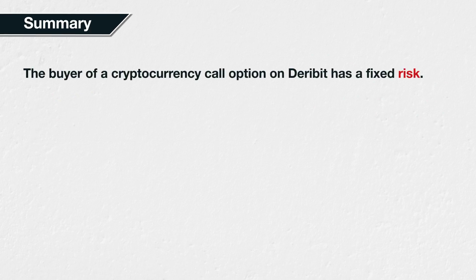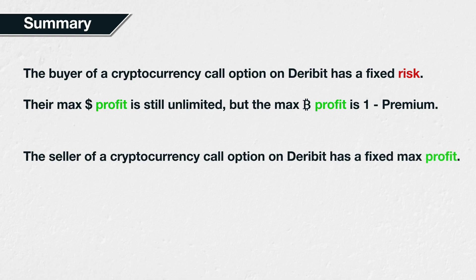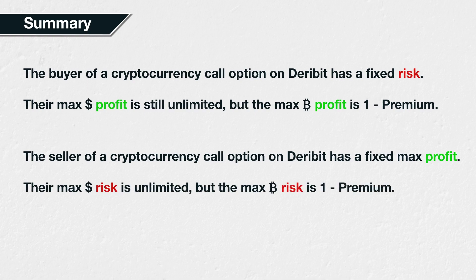In summary, the buyer of a cryptocurrency call option on Deribit has a fixed risk. Their maximum profit measured in dollars is still unlimited, but when measured in Bitcoin is capped at 1 minus the premium paid. The seller of a cryptocurrency call option on Deribit has a fixed profit. They also have potentially unlimited dollar risk, but measured in Bitcoin this risk is capped at 1 minus the premium they collected. While the calculations in dollar terms are the same as section 3, when measured in Bitcoin they are quite different. This difference is important to familiarise yourself with if you are used to using dollars as collateral for options on things like stocks or commodities, and are making the move over to cryptocurrency options for the first time.